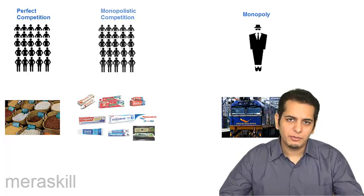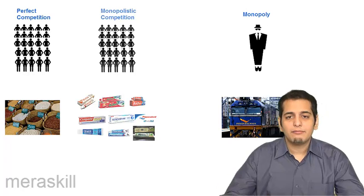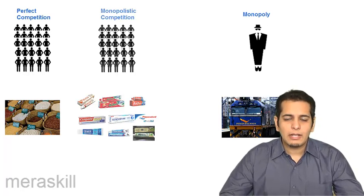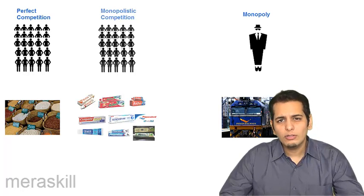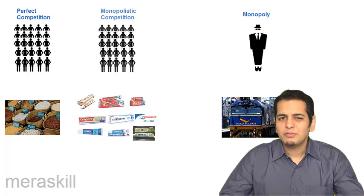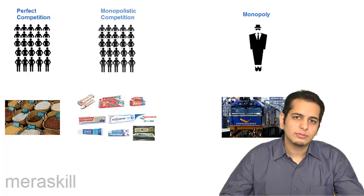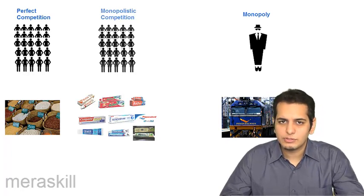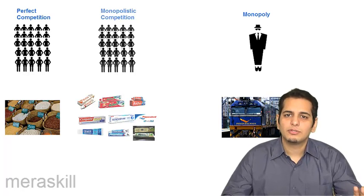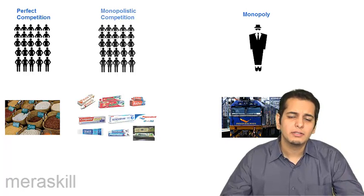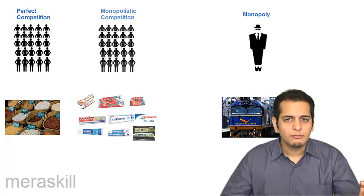In monopolistic competition the products are not homogeneous or identical — they are almost similar, of a similar nature, but may vary from each other minutely. For example, the market for toothpaste is monopolistically competitive. Toothpastes are generally similar, but all toothpaste brands differ from each other in some manner. The product ultimately remains almost similar, so in a monopolistic market you have all the features of perfect competition except one: the products are not homogeneous.